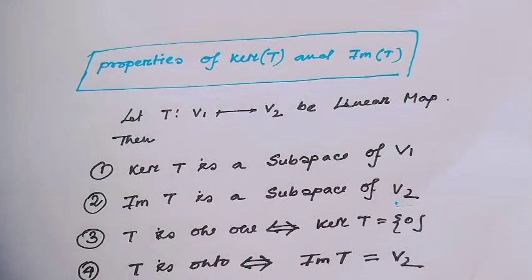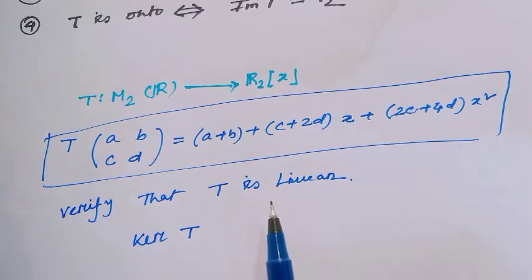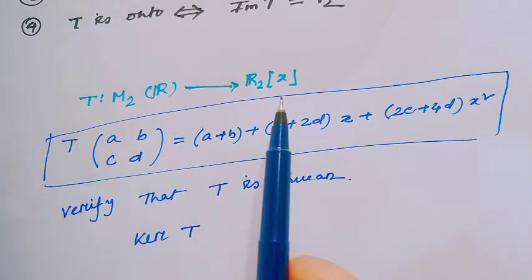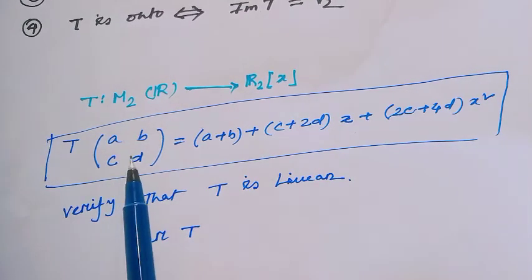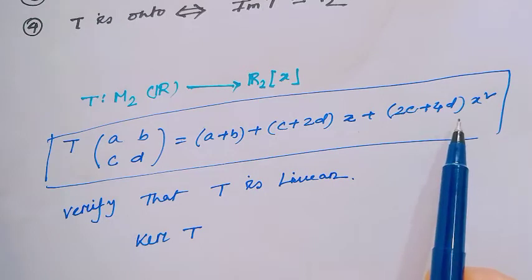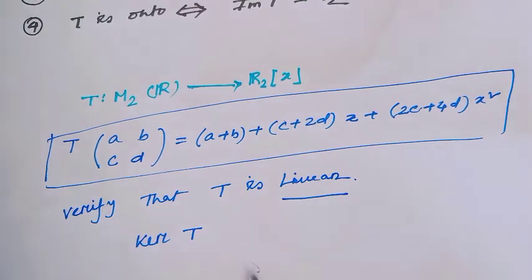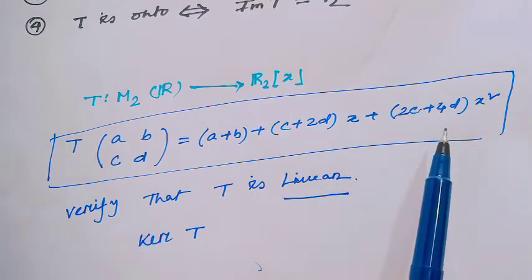I highly recommend you see my previous video first. Let's see one example because these types of examples are very important for competitive exams. Example 1: T from M2(R) to P2(R), where P2(R) is the set of all polynomials of degree 2. The linear transformation is defined as T(a, b, c, d) = (a + b) + (c + 2d)x + (2c + 4d)x². Verify T is a linear mapping — obviously it is, as it is a linear combination.